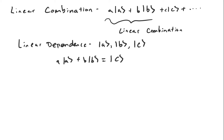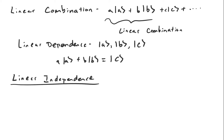The final term is linear independence, and this is just the opposite of linear dependence. If a set of vectors isn't linearly dependent, then we say it's linearly independent. This means that there's no vector in the group that can be expressed as a linear combination of the other vectors in the group.